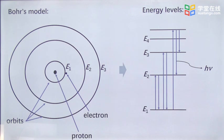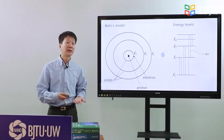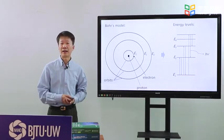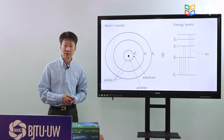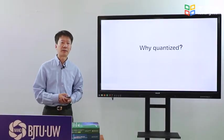The electron absorbs energy, is then excited to higher energy level, or higher orbit. And energy is released if the electron goes back to low energy level. Bohr's model is perfect for hydrogen atom.